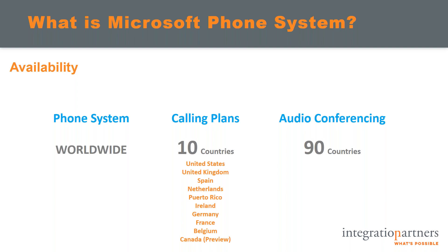Calling plan licensing requires work at the individual country level. Users in only a handful of countries can be assigned calling plans: the United States, United Kingdom, Spain, Netherlands, Puerto Rico, Ireland, Germany, France, Belgium, and Canada, which is currently in preview. Audio conferencing, formerly known as dial-in conferencing, is available in 90 countries, meaning local dial-in conferencing numbers are available for 90 different countries.